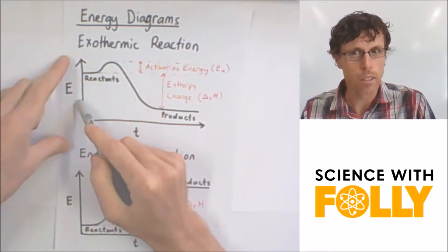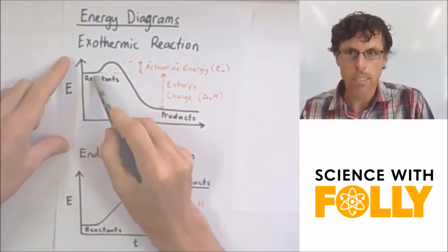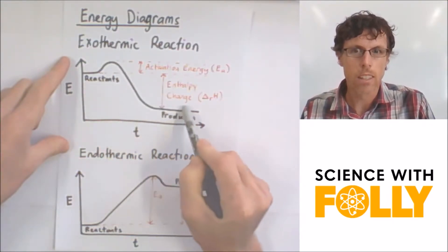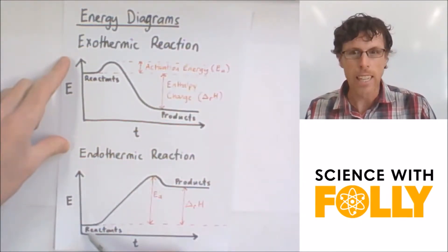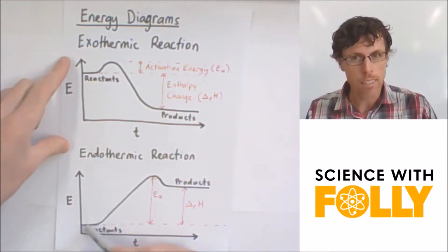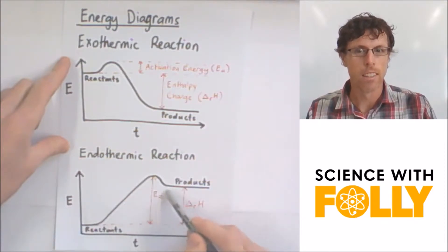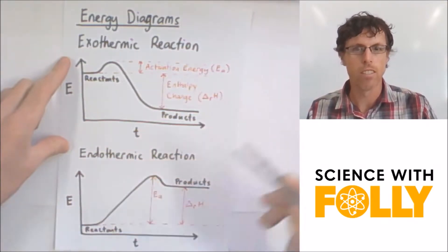You can see in the exothermic reaction that the reactants have more energy than the products, and that is because energy is released. Whereas in the endothermic reaction, the reactants have less energy than the products, and that means energy is absorbed.